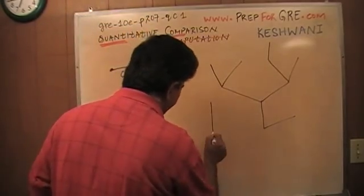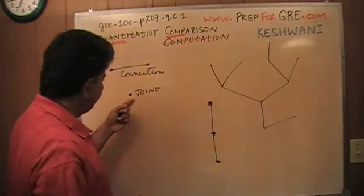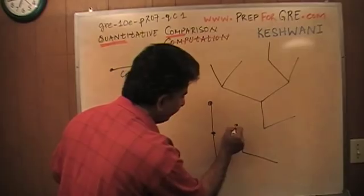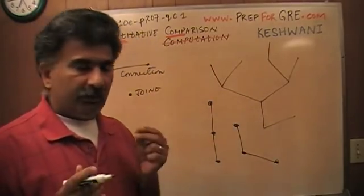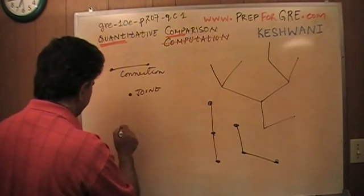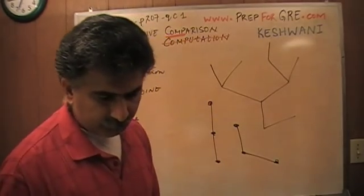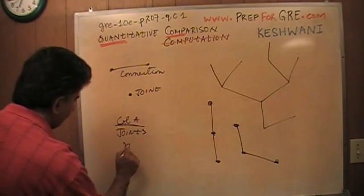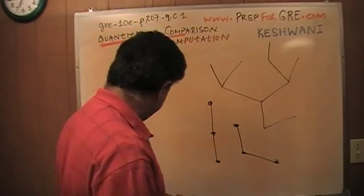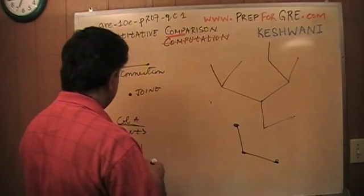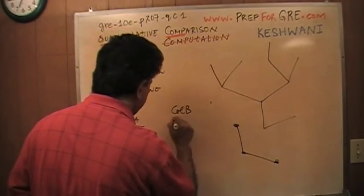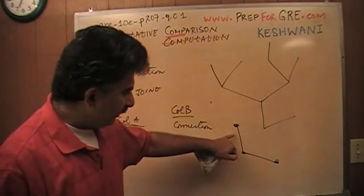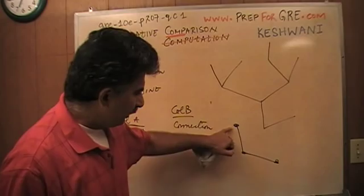Just think of it this way: if I put two connections together — one and two — they're defining this as a connection, and it has three joints obviously, because it's not closed. So in Column A you have joints, and joints are always going to be one more than the connections. If you have n connections, the joints are going to be n plus one. As you can see here: two connections, three joints — one, two, three.